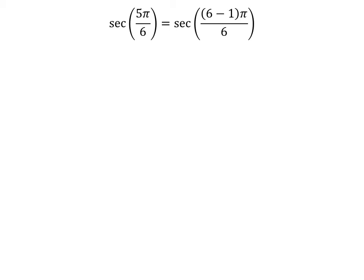Here is the first method explained. We know 6 minus 1 is equal to 5. So secant of 5 times pi upon 6 is equal to secant of 6 minus 1 times pi upon 6. Expanding the numerator, we get secant of 5 times pi upon 6 is equal to secant of 6 times pi minus pi upon 6.